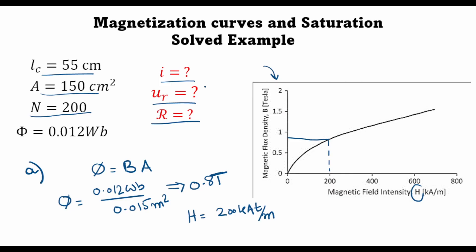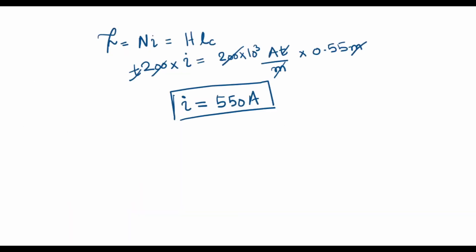So let's proceed to part B, which asks us to calculate the value of the relative permeability required to produce a flux of 0.012 Webers in the core. For this we will start off with the well-known relation B is equal to mu times H.